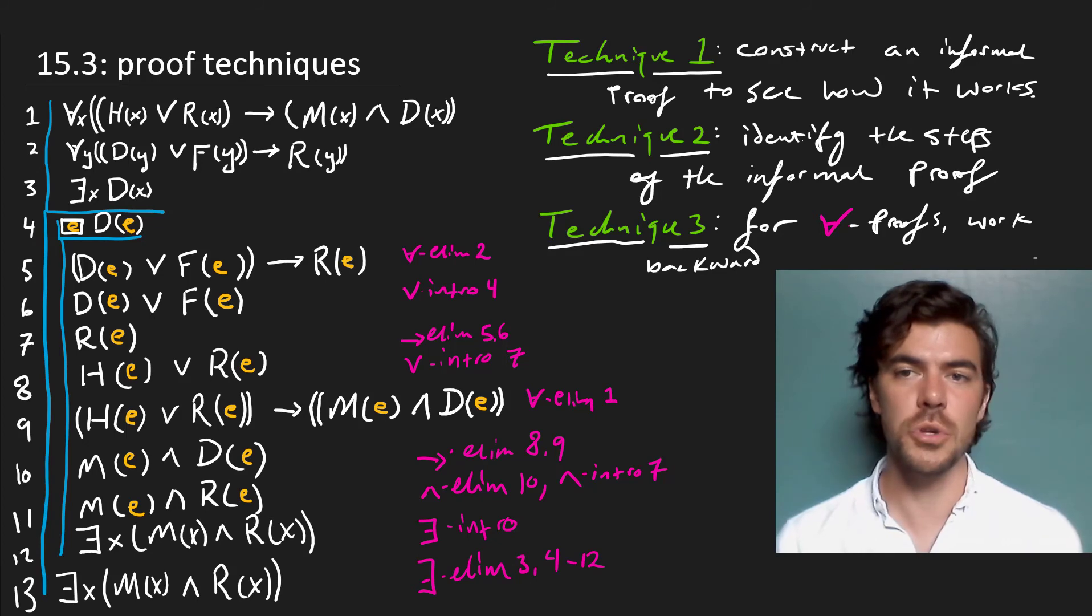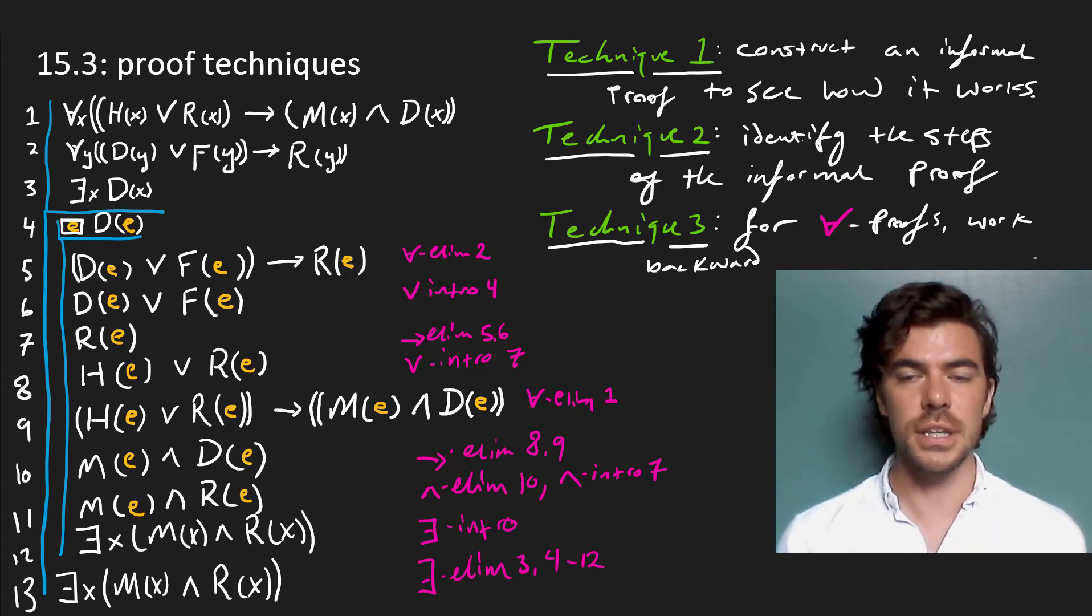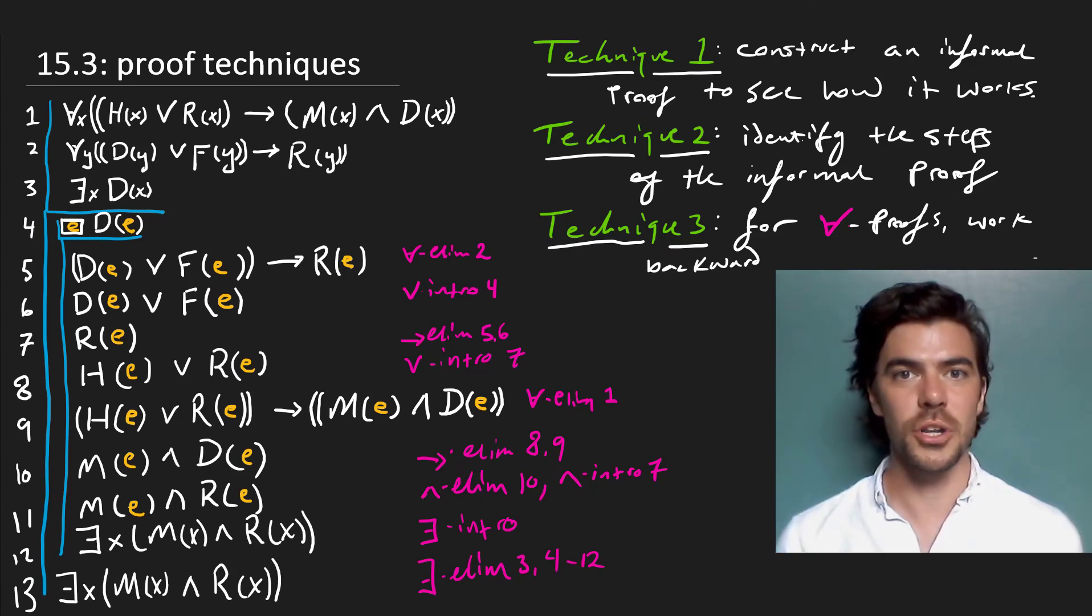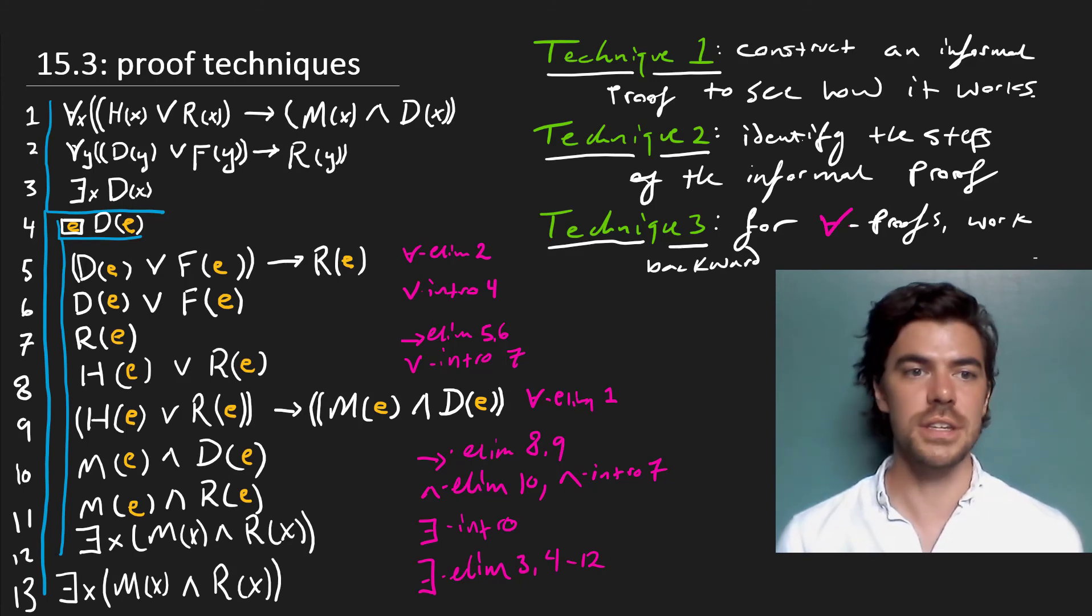So as you can see, we've used these techniques of constructing an informal proof, recognizing the steps that we're using in the informal proof and their correspondence with the formal rules and then writing out the whole thing using the technique of working backwards from universal proofs if need be. And so what looked like a forest of formulas, if you will, at the outset of this proof has, by application of these techniques and careful thought about what makes the argument work, given us the formal derivation that we wanted.